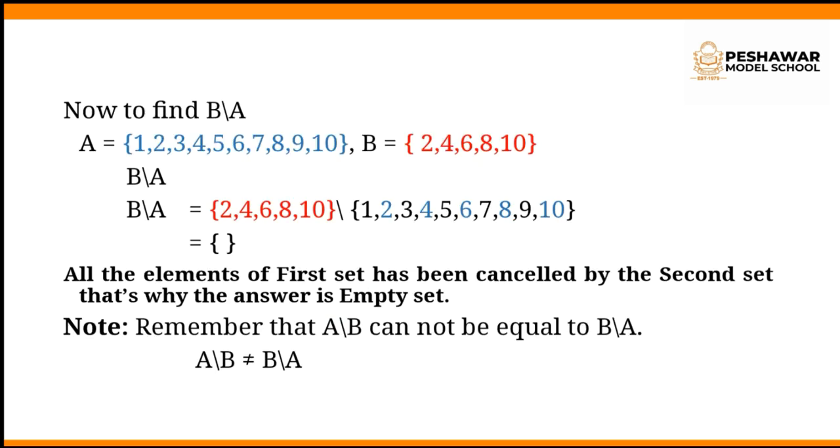Now, in the second example we have to find B difference A. So the set A equals {1, 2, 3, 4, 5, 6, 7, 8, 9, 10} in blue color and set B equals {2, 4, 6, 8, 10} in red color. B difference A equals, you have to first write the red ones because in this example B is first and A is second. Write the elements of B before the difference sign and then write the elements of A after the difference sign.